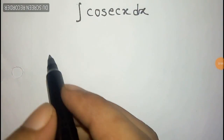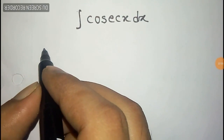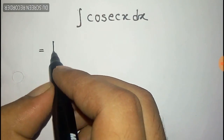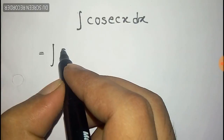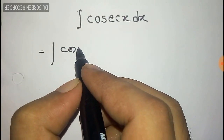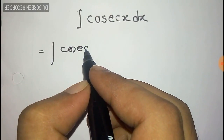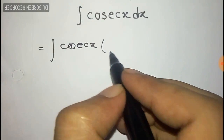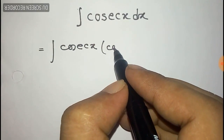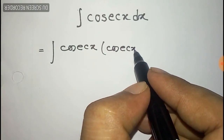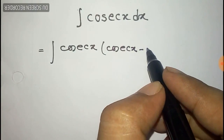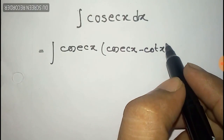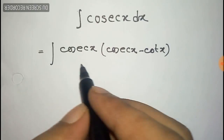We have to integrate cosec(x) dx. For this we shall first multiply both numerator and denominator with cosec(x) minus cot(x).